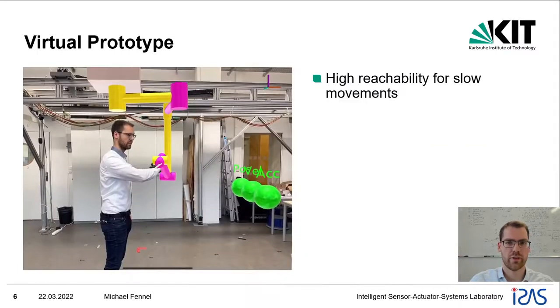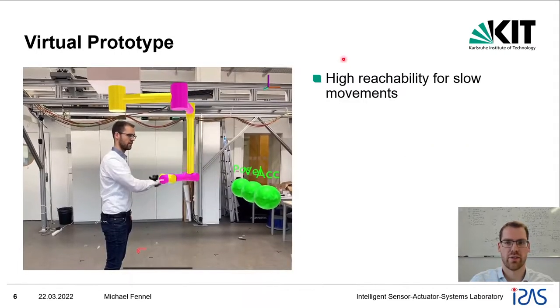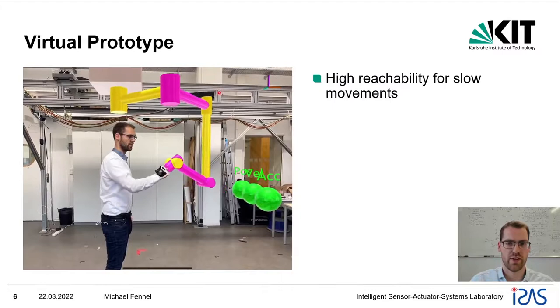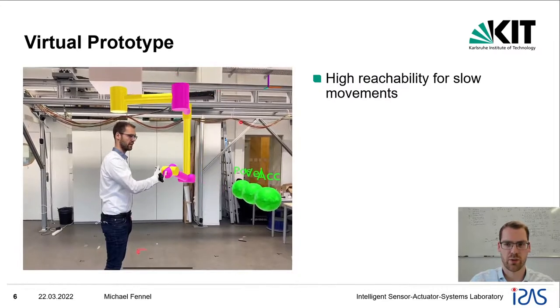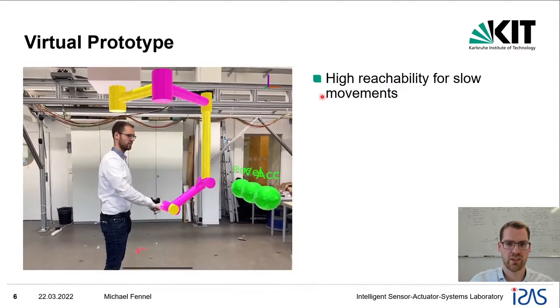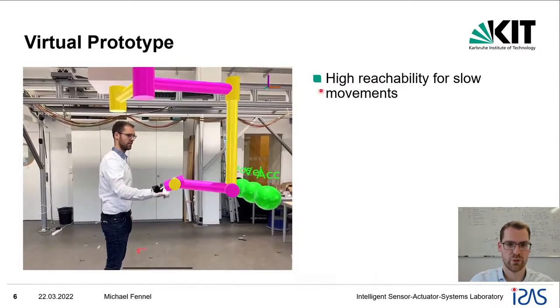To verify the results of the optimization, we created a virtual prototype. This prototype confirms that we have very high reachability for slow movements, as we can see on the green indicators here.